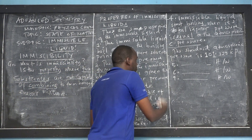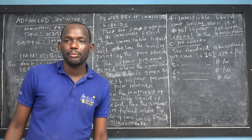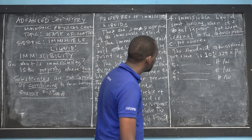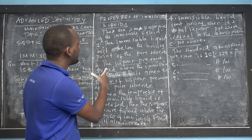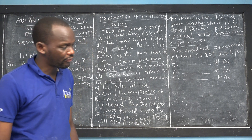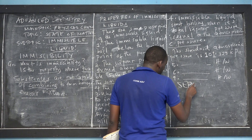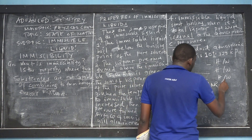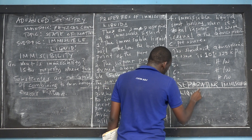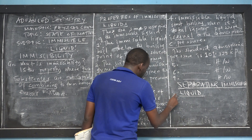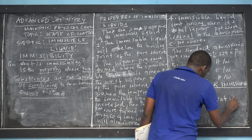Now, the issue is this: you now know how to form immiscible liquids, but that's not enough for the chemist. A chemist has to know how to form immiscible liquids and also how to separate them. So after learning about properties of immiscible liquids, we now have to learn different methods of separating immiscible liquids.